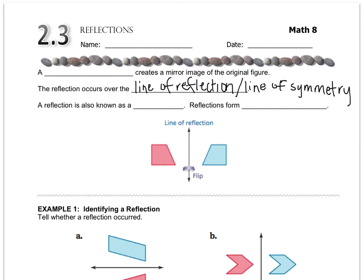Now, the reflections that we mostly deal with are across the x-axis or the y-axis, but as you get into high school, you will be reflecting over other lines, random lines, diagonal lines, but we're just going to keep it simple for now.